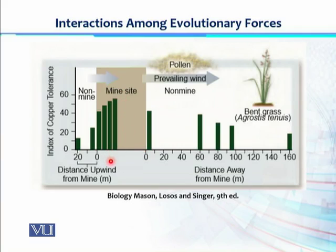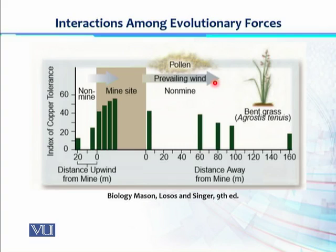But at the same time gene flow is also acting. The bent grass plants produce pollens which are dispersed by the wind — air pollination. Through pollination, the heavy metal tolerance gene flows from the mining site and moves towards other areas where high metal tolerance gene or allele is not present. When those pollens are involved in fertilization in this new area, the resulting bent grass plants with the heavy metal tolerance allele are not supported by natural selection there.